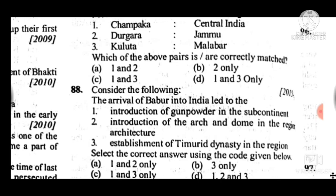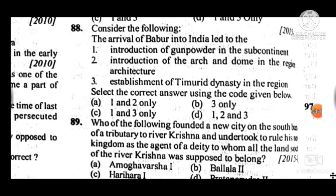Question 89: Who founded a new city on the south bank of a tributary of the river Krishna and chose to rule as an agent of a deity to which all land south of the Krishna river was supposed to belong? Answer is C, Harihara I.